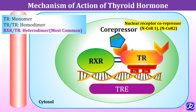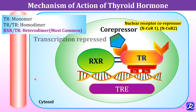When the trans activation domain is bound to a co-repressor — which can be N-COR-1 or N-COR-2, that is nuclear receptor co-repressor 1 and nuclear receptor co-repressor 2 — in the absence of thyroid hormone, the transcription is repressed.